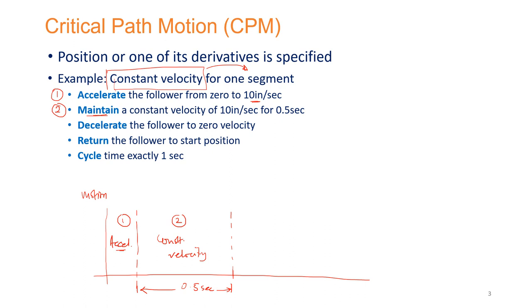In physical terms, you accelerate and then maintain a particular velocity — that number is already known. This is the critical path we are concerned about. Then the motion decelerates: there is a phase for which deceleration is going on, and eventually, at the end of this segment, zero velocity is achieved — zero inches per second.